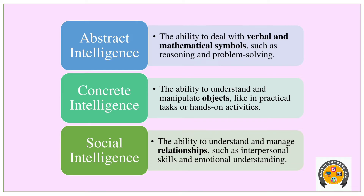To summarize: Abstract Intelligence deals with verbal and mathematical symbols. Concrete Intelligence is the ability to handle hands-on activities and physical objects. Social Intelligence is the ability to manage good relationships in society, such as interpersonal skills and emotional understanding.